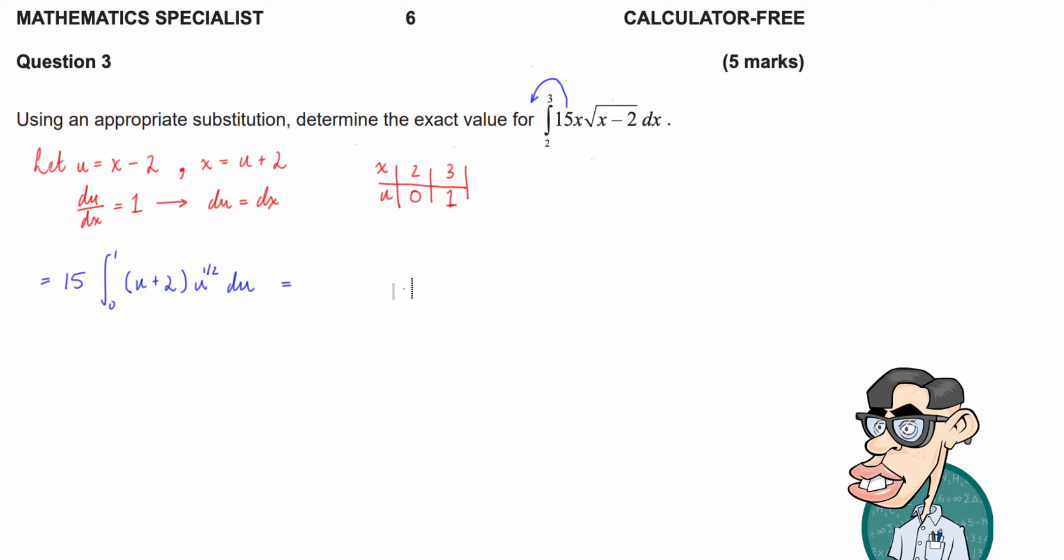So from here we're just going to do a little bit of algebra. We're going to keep that 15 exactly where it is and then I'm just going to multiply into that bracket there. So we're going to have 15 times the integral from 0 to 1. u to the power of 1 times u to the power of a half is u to the power of 3 over 2 plus 2u to the half. Now I'll put that in a bracket and then we're just going to go du. So now guys we've got an integral that we can deal with. So let's actually take the integral from here I reckon.